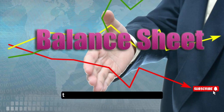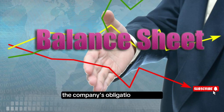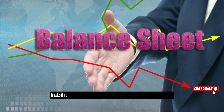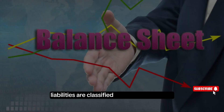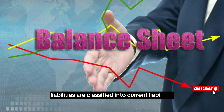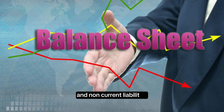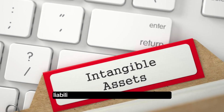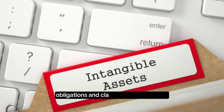Liabilities represent the company's obligations or debts. Similar to assets, liabilities are classified into current liabilities — accounts payable, short-term debt — and non-current liabilities — long-term debt, deferred tax liabilities. Liabilities indicate the company's financial obligations and claims against its assets.